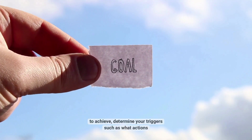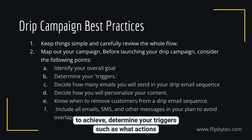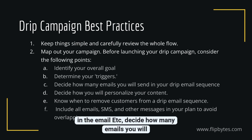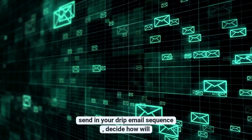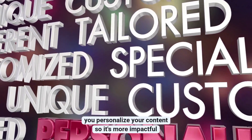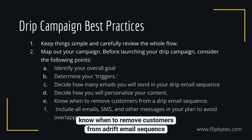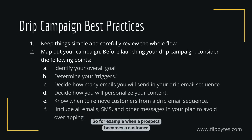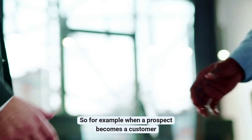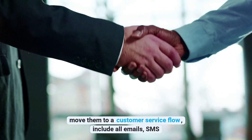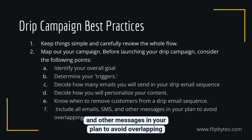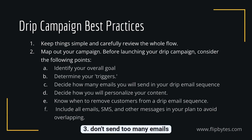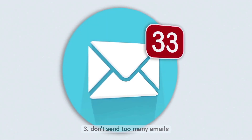Two: map out your campaign. Before launching, identify your overall goal and what you're looking to achieve. Determine your triggers — what actions to take when a customer clicks a link, for example. Decide how many emails you will send, how you'll personalize your content, and when to remove customers from a drip sequence. For example, when a prospect becomes a customer, move them to a customer service flow. Include all emails, SMSs, and other messages in your plan to avoid overlapping.